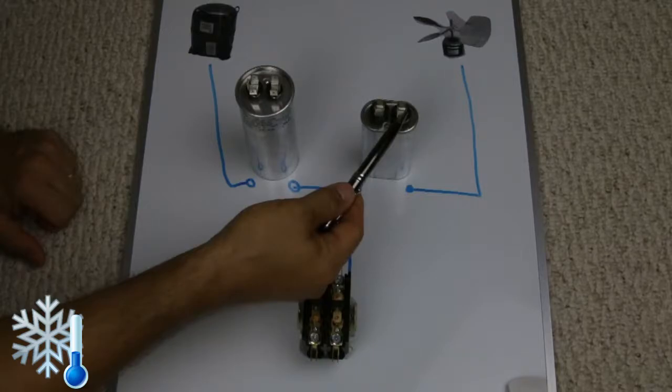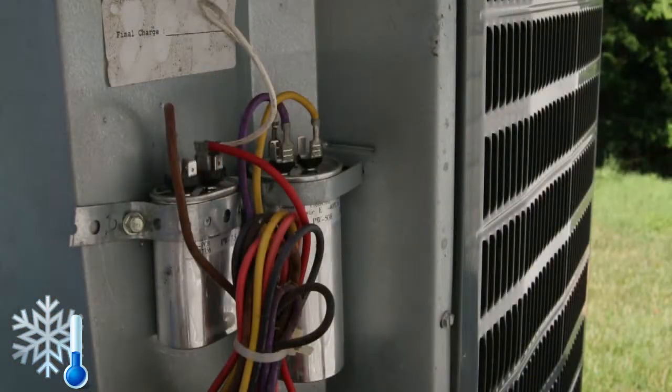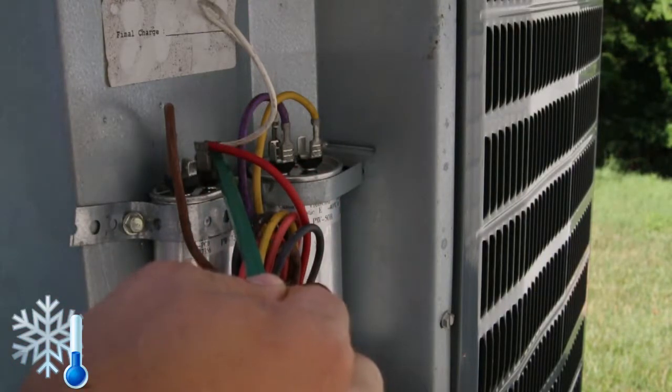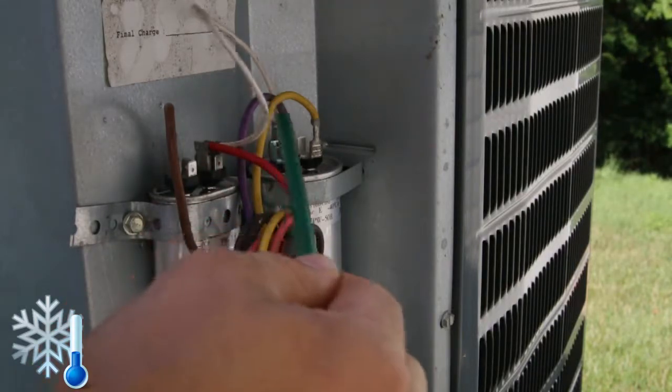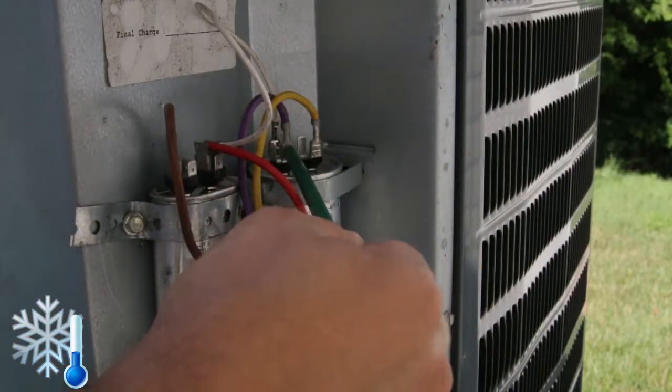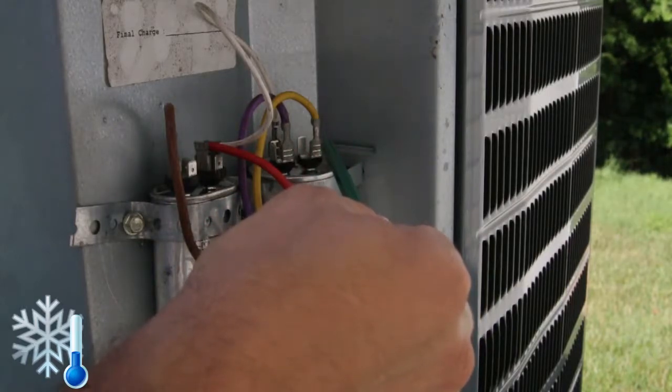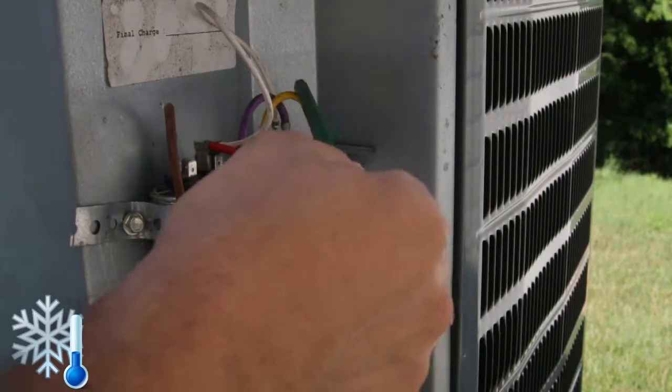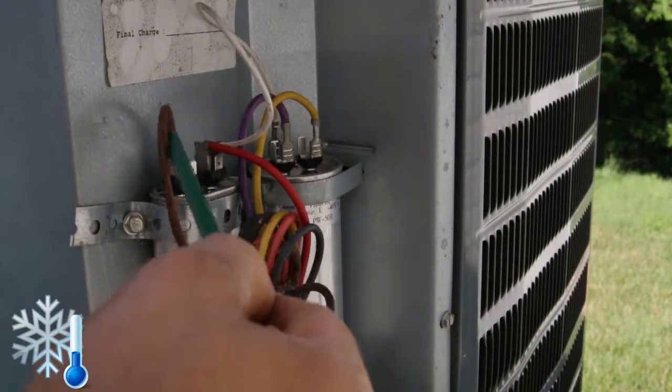The common wire coming from the contactor goes to one side of one capacitor. Then we got a jumper wire, the white wire is actually jumping so that one is common side too. From the other side of the compressor capacitor, the wire is connected toward the compressor, and from the other side of the fan capacitor it's connecting the fan.